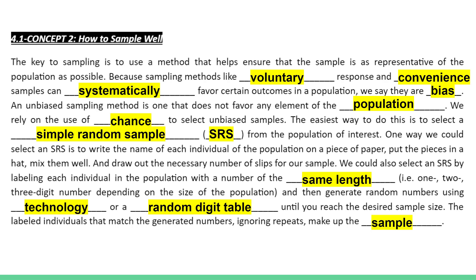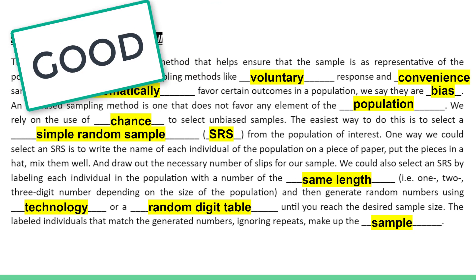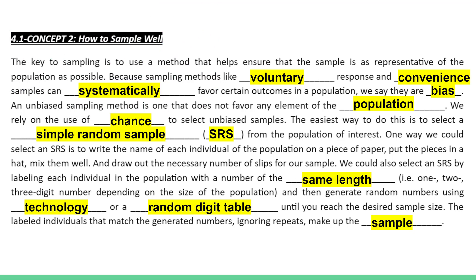In our last lesson, we talked about some bad sampling strategies, like voluntary response and convenience sampling. These were bad because they systematically favored certain outcomes in your population, so we said they were biased. Now we're moving on to some good sampling strategies. The big idea with a good sampling strategy is that it's going to rely on chance.